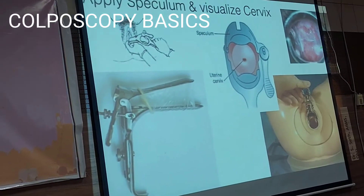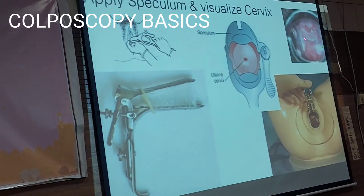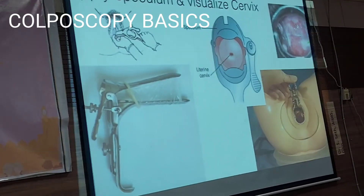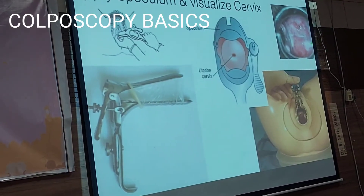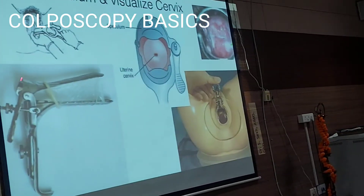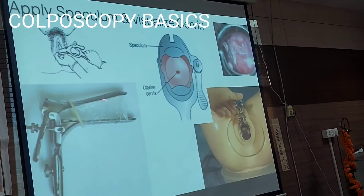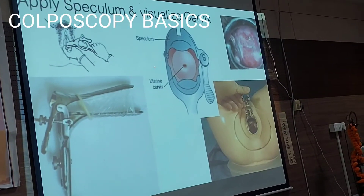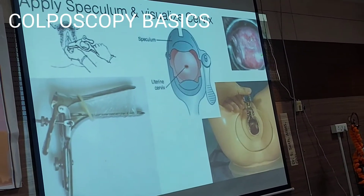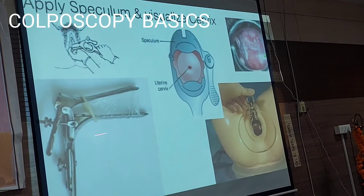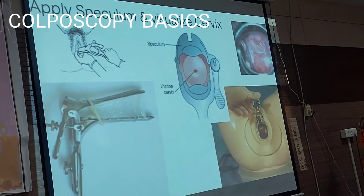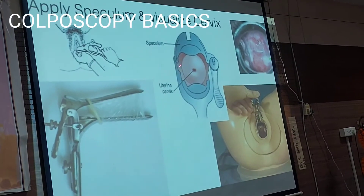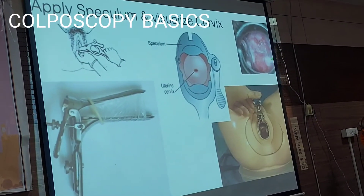Adjust the position of the speculum so that you can have a good panoramic view of the cervix. If the lateral walls are bulging, you can use lateral vaginal wall speculums, or another modification is to use a condom over the Cusco speculum with the tip cut, so that when you open up the speculum the condom stretches the vaginal wall and keeps it separate, giving you a good view of the cervix in the center.